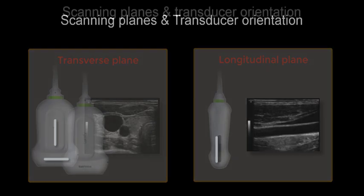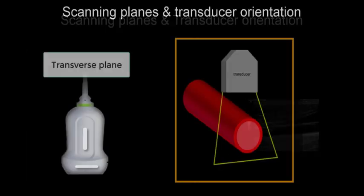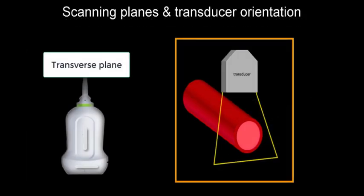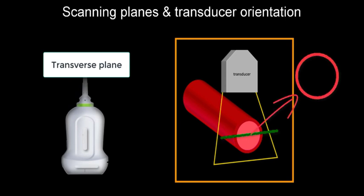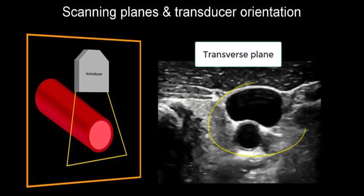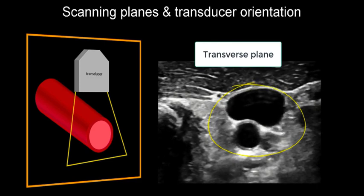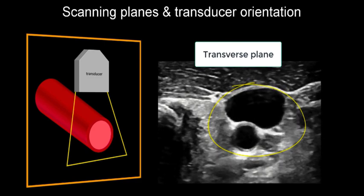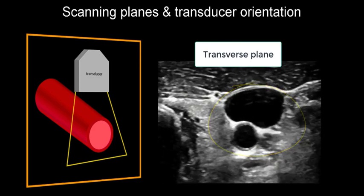In the transverse plane, the transducer is perpendicular to the surface of the blood vessel, and the image that we will obtain on the ultrasound is the cross-section view of the blood vessel, therefore resembling the shape of a circle. As shown in this video, we have a cross-section view of the common carotid artery and jugular vein.